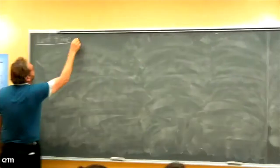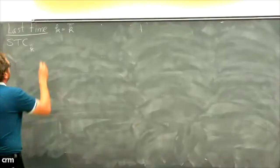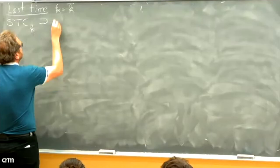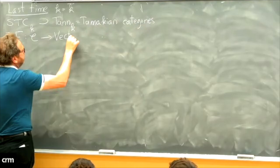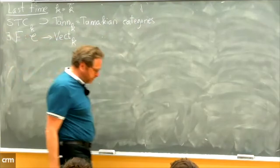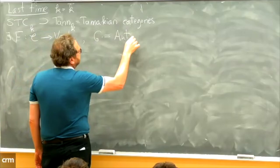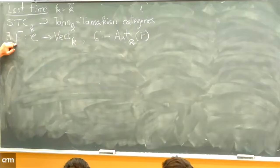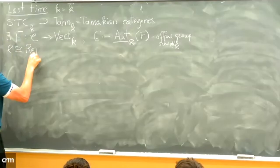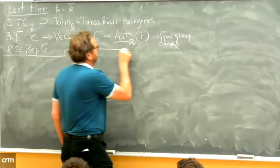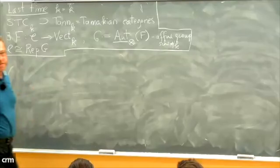Last time we worked over an algebraically closed field k. We defined symmetric tensor categories over k and the subclass called Tannakian categories — categories for which there exists a fiber functor from c to the category of vector spaces over k. This functor is unique up to a non-unique isomorphism, and we can take its automorphisms as a tensor functor. We then have an affine group scheme, and c is equivalent to the category of finite-dimensional representations of this affine group scheme. The question is: is this a proper inclusion — are there other symmetric tensor categories?